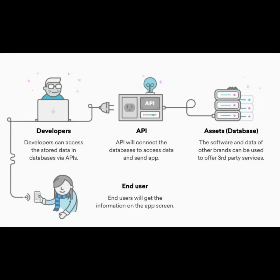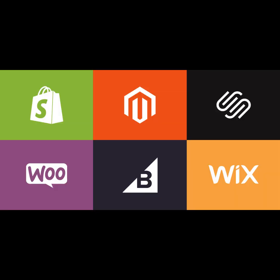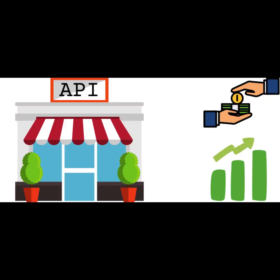Step two: develop the tool or API. Build the developer tool, library, or API using your coding skills. Ensure it is well-documented and easy to integrate into various projects. Step three: set up an e-commerce website. Create a website to showcase and sell your developer tool or API using platforms like Shopify, WordPress with WooCommerce, or BigCommerce.